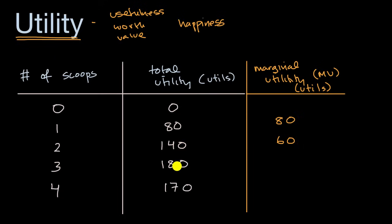And then that continues to happen on that third scoop. To go from 140 to 180, that third scoop gave you 40 units of utility. And then as we talked about, when you add on that fourth scoop, it didn't even add to your total utility. It took away from your total utility. So it actually had a negative marginal utility. It is negative 10. That fourth scoop actually took away from your happiness. So I will leave you there.